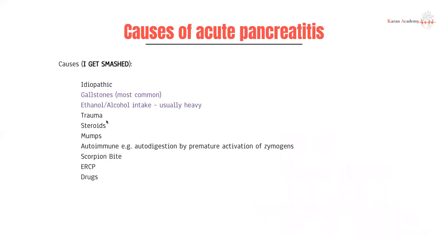Next we have ethanol — alcohol induction, commonly from heavy alcohol use. Then trauma, steroids, and mumps, which is an infective condition that can have widespread levels of inflammation. ERCP is interesting because it's a procedure where we use a scope going down the esophagus through the stomach to the second part of the duodenum, and insert a probe up the bile duct — commonly used for things like gallstone destruction or retrieval, using stents, and taking biopsies. In this process you can cause blockages and local irritation of the pancreas, which is why you can get pancreatitis.